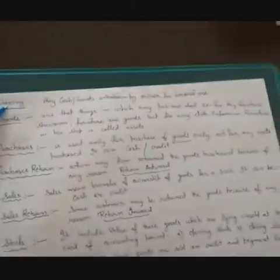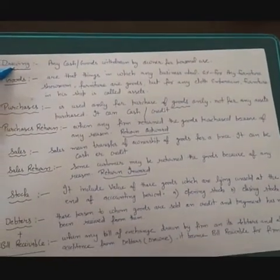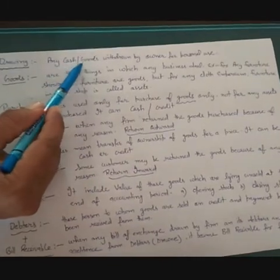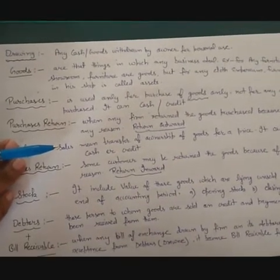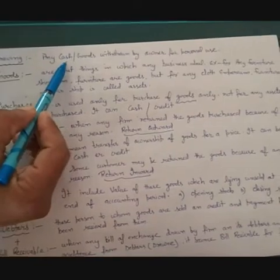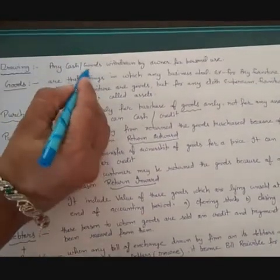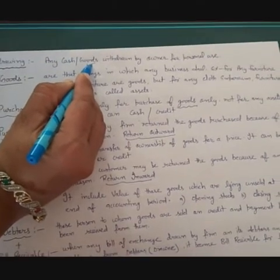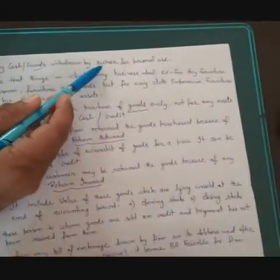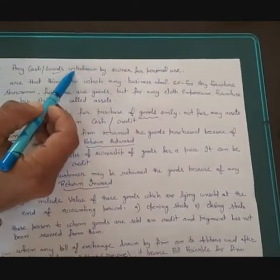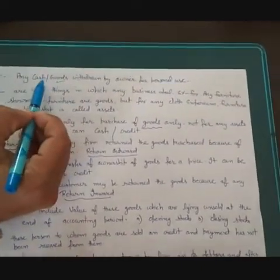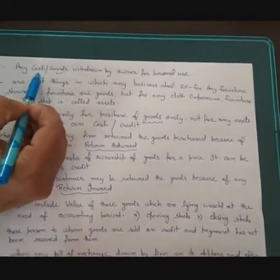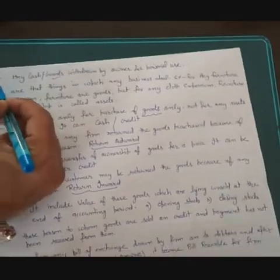The next term is Drawings. Drawing means any cash or goods withdrawn by the owner for personal use. If the owner withdraws any cash or goods from the business for personal use, that is not the personal property of the owner — it is the firm's property. So when the owner withdraws cash or goods for personal use, that is known as Drawings.